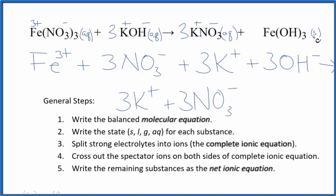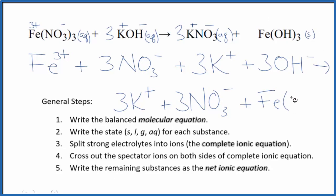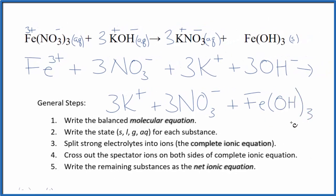For the iron 3 hydroxide, it's a solid. We don't split solids apart in net ionic equations. So that's just Fe(OH)3. It just stays together. And that's the complete ionic equation.